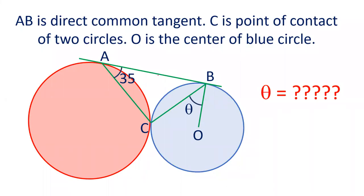Hello friends. Welcome to our YouTube channel SSA Selector. In today's video, there is a direct common tangent given to two circles. The two circles touch at point C, and the angle between the chord and the common tangent is 35 degrees. O is the center of the blue circle and we have to find out the value of angle OBC. Let us see how we can solve this question.